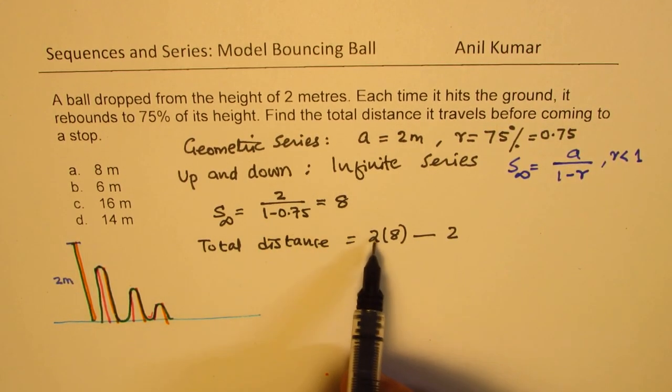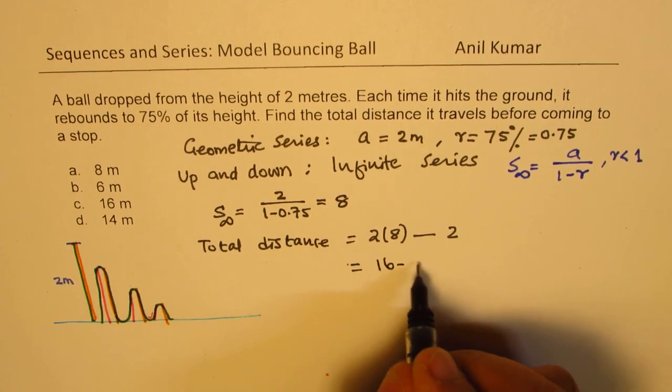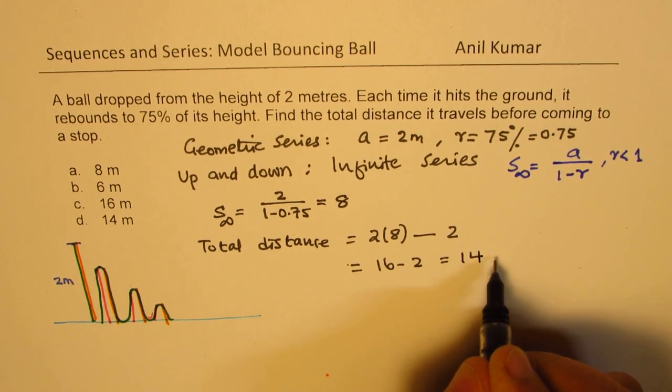So 2 times this minus 2 should be the correct answer. We have 16 minus 2 which is 14 meters.